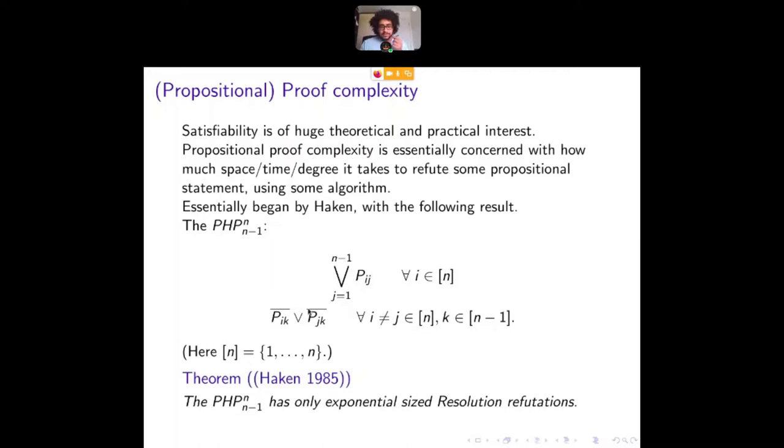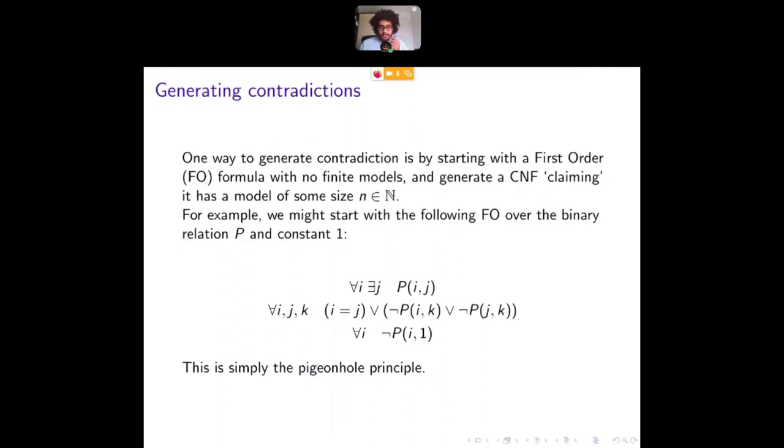So proof complexity theorists, they work with contradictions like these, and there's loads of ways to create these contradictions. But we're going to look at two different ways of generating them from first order formula. So the idea is for any given first order formula, you can produce a CNF that claims that this formula has a model of size N. So if this first order formula has no finite models, if it only has infinite models, then this is always a contradiction.